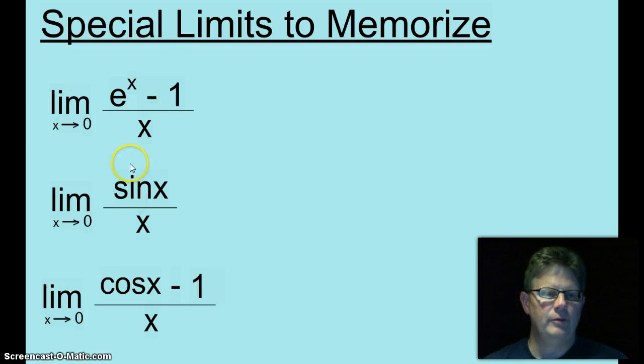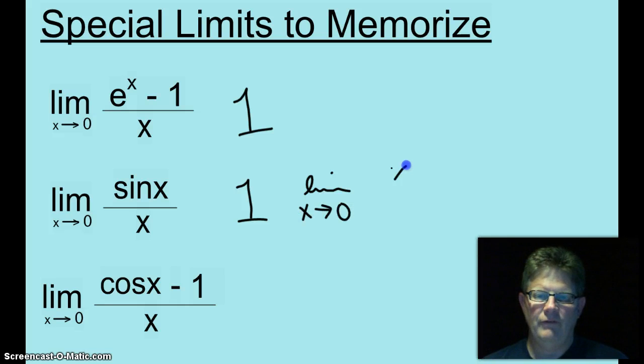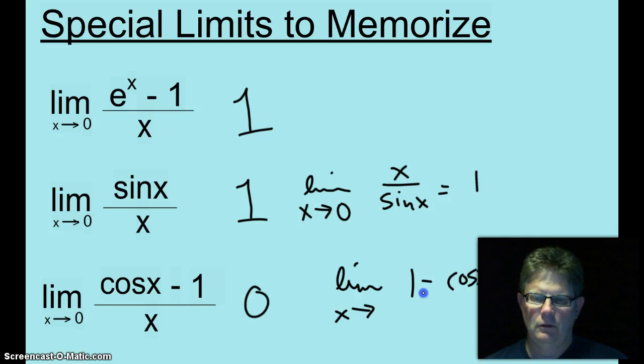Does this one look familiar? That's the one I had at the beginning. The limit as x approaches zero of e to the x minus one over x. That limit is one. The limit as x approaches zero of sine x over x? One. By the way, the limit as x approaches zero of x over sine x? That's also going to equal one. It's just a reciprocal of one. And the limit as x approaches zero of cosine of x minus one over x? Zero. Or it can also be written this way sometimes. The limit as x approaches zero of one minus cosine of x all over x. That also will equal zero.